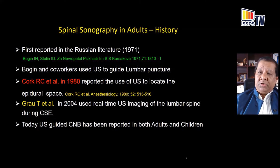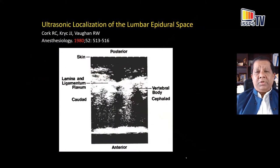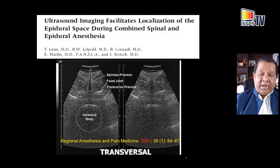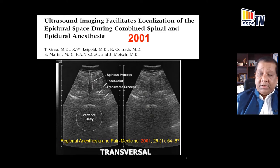Today, ultrasound is used both in adults and children. This is Dr. Thomas Grau and a much younger me, many years ago in Toronto. Dr. Thomas Grau is from Germany. Looking at some of these early published images, structures were labeled as ligamentum flavum, vertebral body, etc. While it's easy to criticize the image quality, at the time this was all they had — showing how visionary they were. Dr. Grau very painstakingly labeled all the structures in this fuzzy image, and he used this in clinical practice to perform central neuraxial blocks.